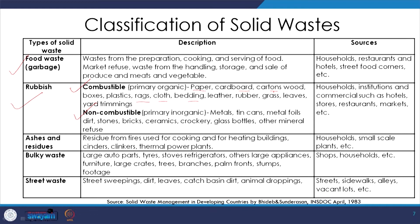Non-combustible rubbish includes metals, construction waste, glass, and other mineral refuse. Then there are ashes and residues — from fire used for cooking and heating, thermal power plants, cinders and clinkers. Bulky waste is large waste such as discarded refrigerators, televisions, large appliances, and huge trees. Street waste includes street sweepings, dirt, leaves, catch-basin dirt, and animal droppings. Then we have dead animals and construction and demolition waste, which is of great concern in sustainable architecture.